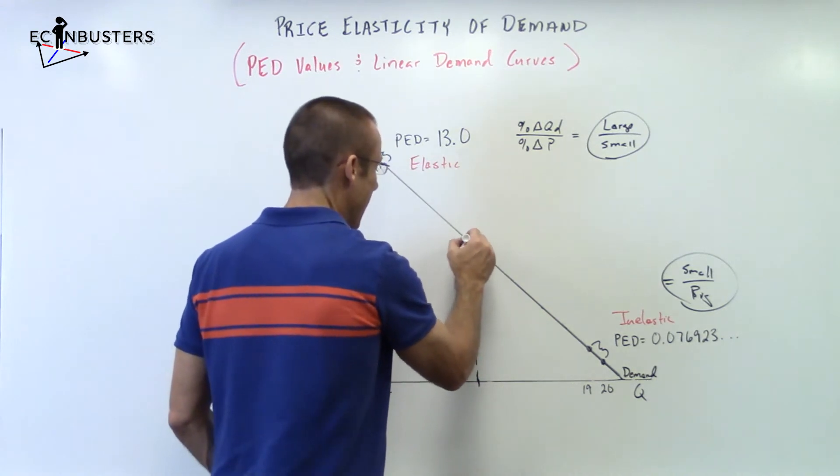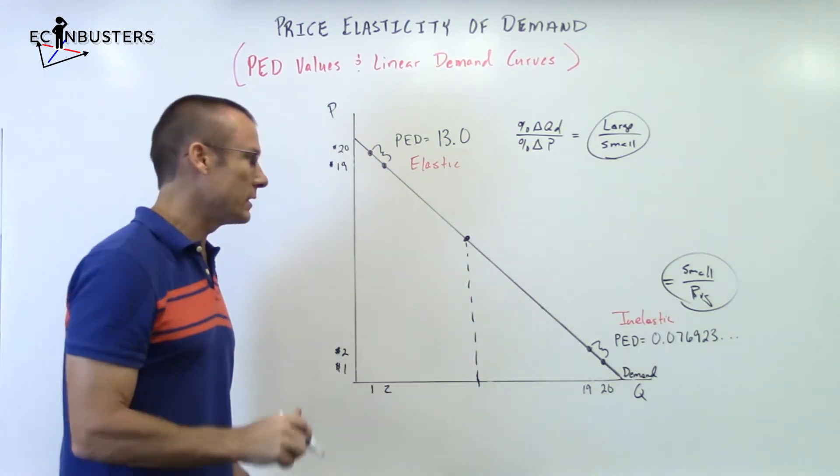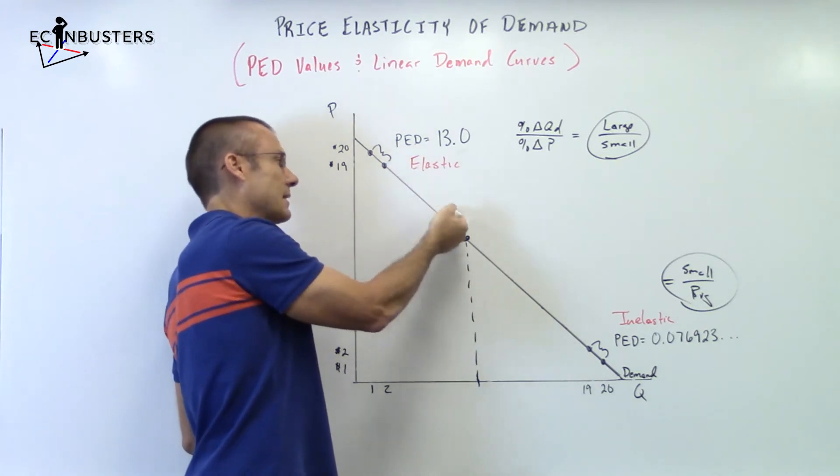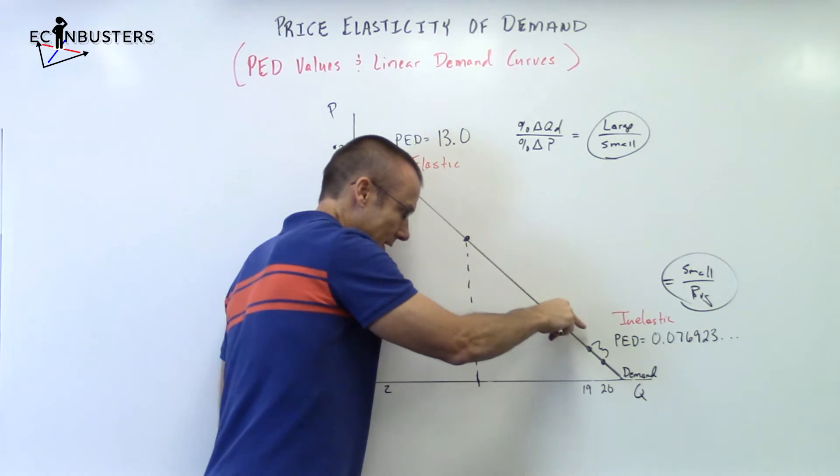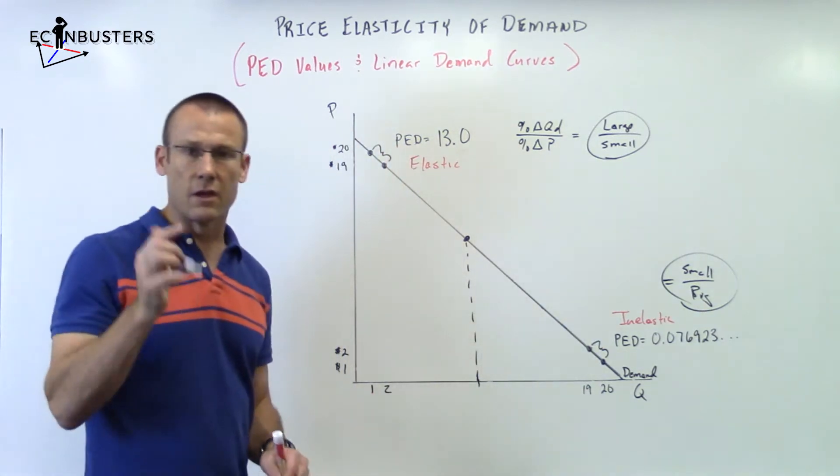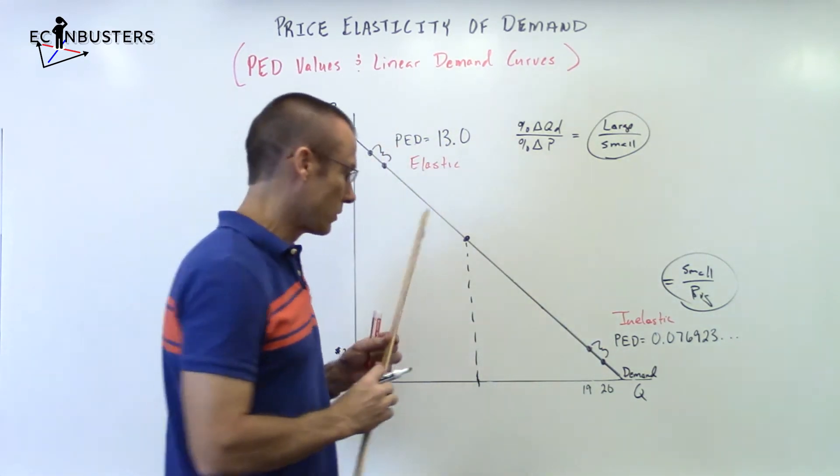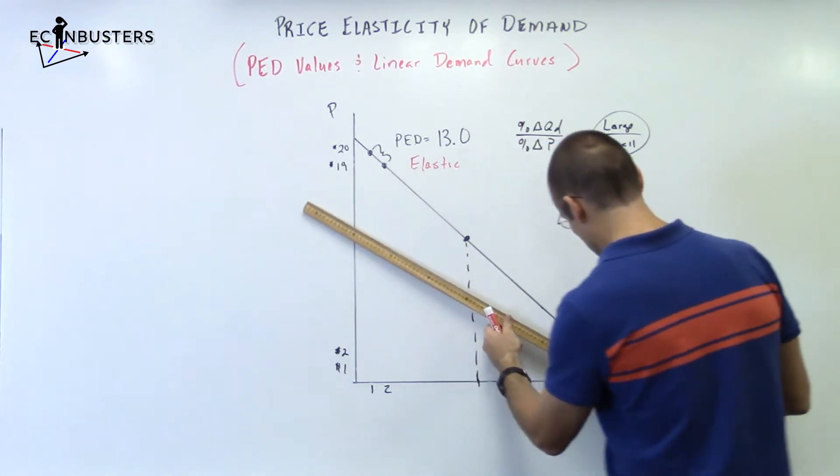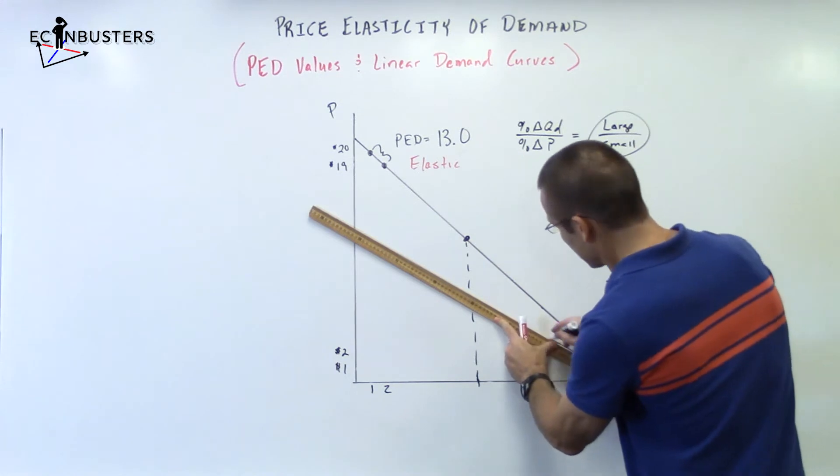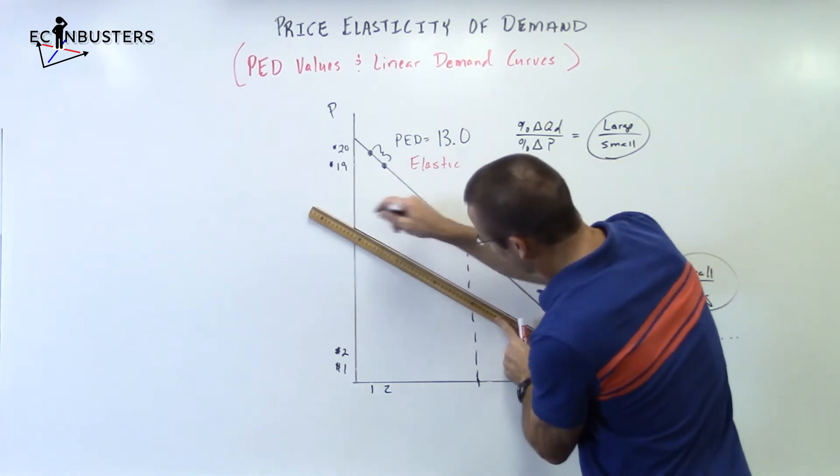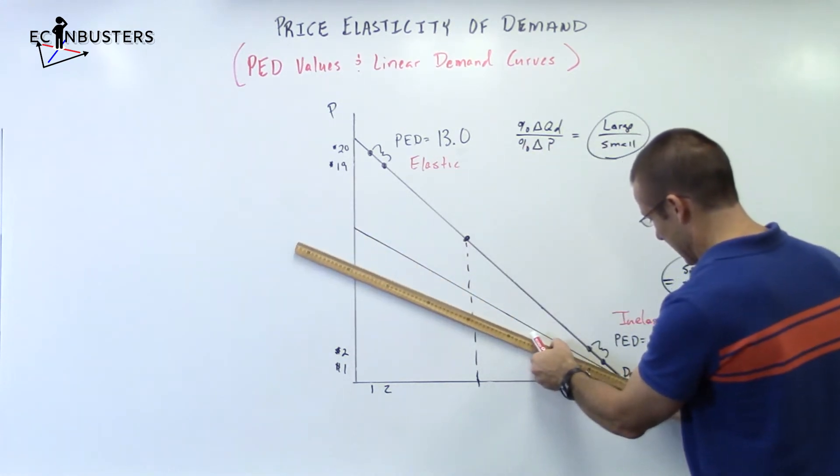Right there at that point we are unit elastic. Anywhere up here, elastic - getting more and more elastic as we go that direction, getting more and more inelastic as we go that direction. I want to show you one other thing that's kind of cool. I'm going to have to step in the frame a little bit. I don't know if it's cool, it's just important that you understand it, really is probably the best way to say it. So I'm going to do another linear demand curve and then I'm going to do another linear demand curve.